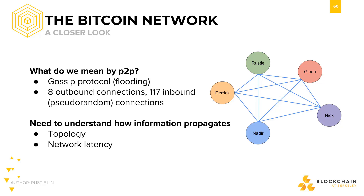For example, if the network actually looked like this, and I wanted to send a message to Nick, I would tell my neighbors Derek and Gloria. Derek and Gloria would then tell their neighbors, and Derek is connected to Nick, so Nick gets my message. One note is that as we discussed in the Bitcoin Mechanics module, my message would be digitally signed.